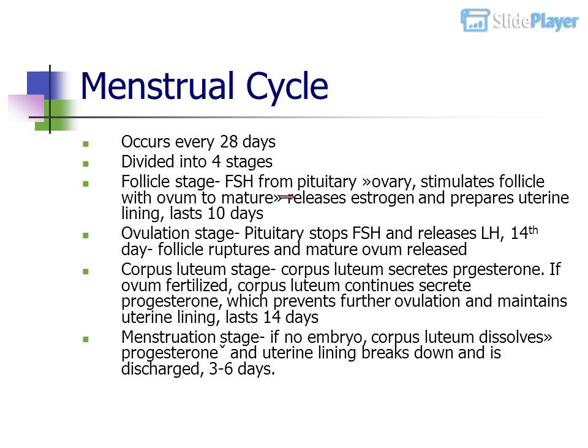The menstrual cycle occurs every 28 days and is divided into 4 stages. The follicle stage: FSH from the pituitary stimulates a follicle with an ovum to mature, releases estrogen, and prepares the uterine lining. This lasts 10 days. The ovulation stage: the pituitary stops FSH and releases LH; on the 14th day, the follicle ruptures and a mature ovum is released.